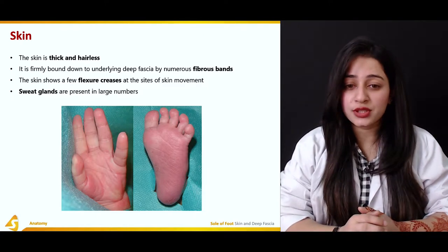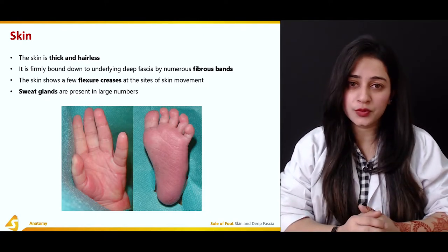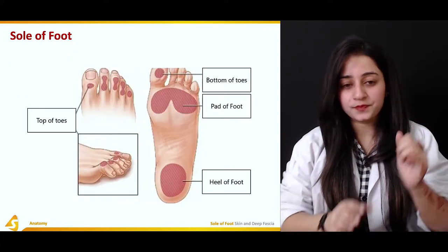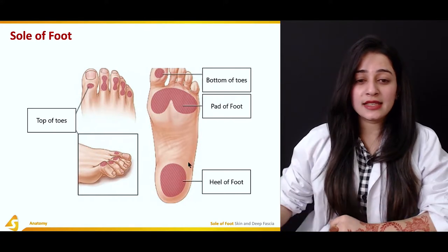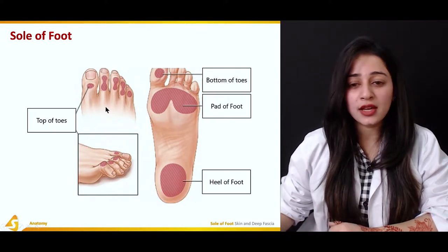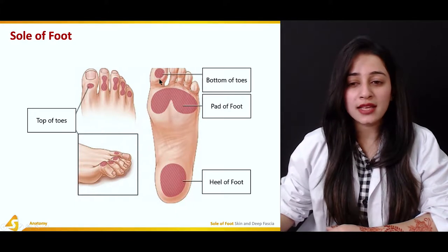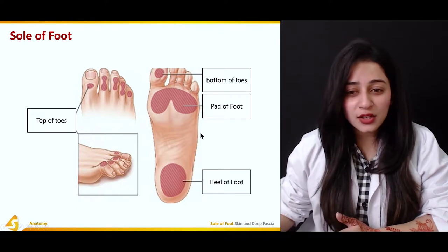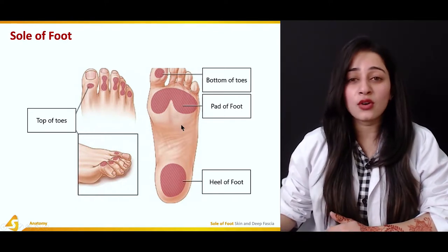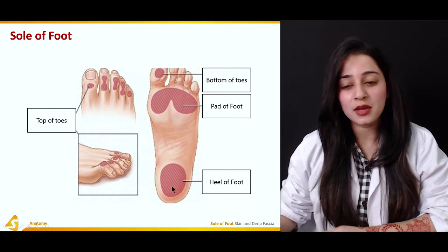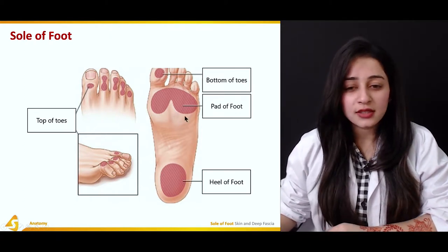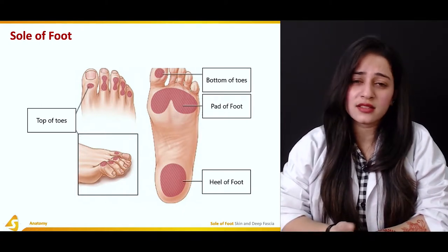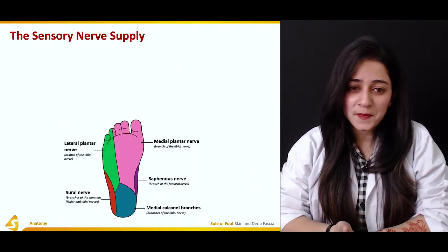Sweat glands are present in large numbers in the sole, just as we sweat a lot in our hands. This is the dorsal aspect of your foot, and this one is your sole. It has the bottom of the toes — we have five toes. We also have the pad of the foot, which can hurt a lot if we walk constantly for a very long time, and we have the heel of the foot.